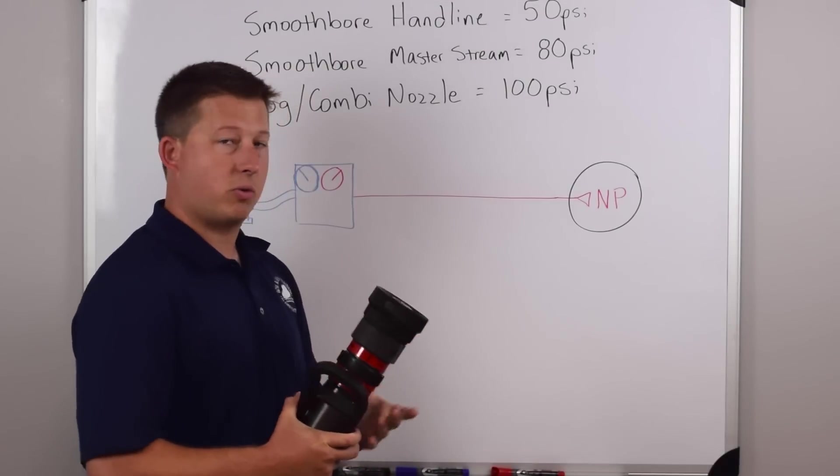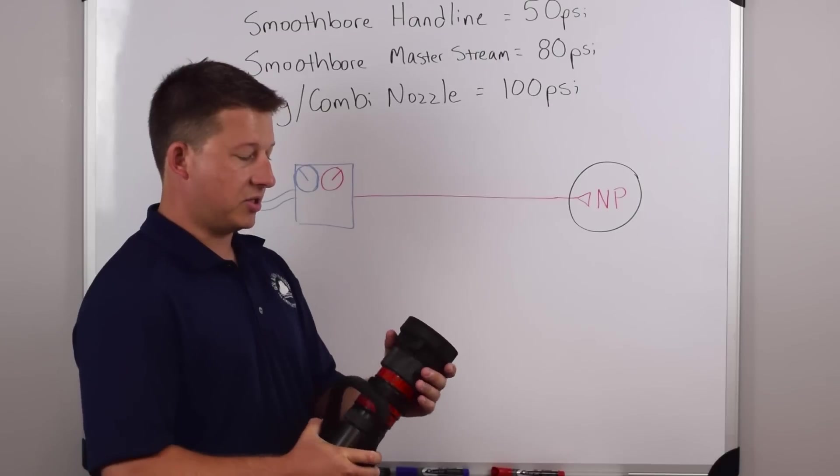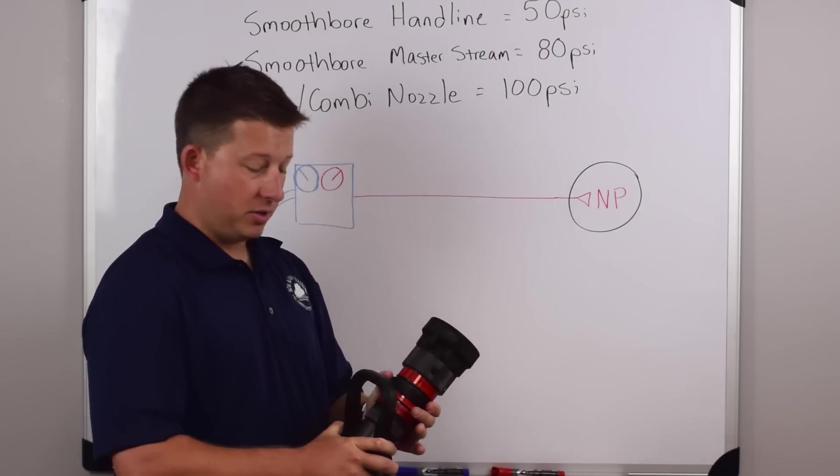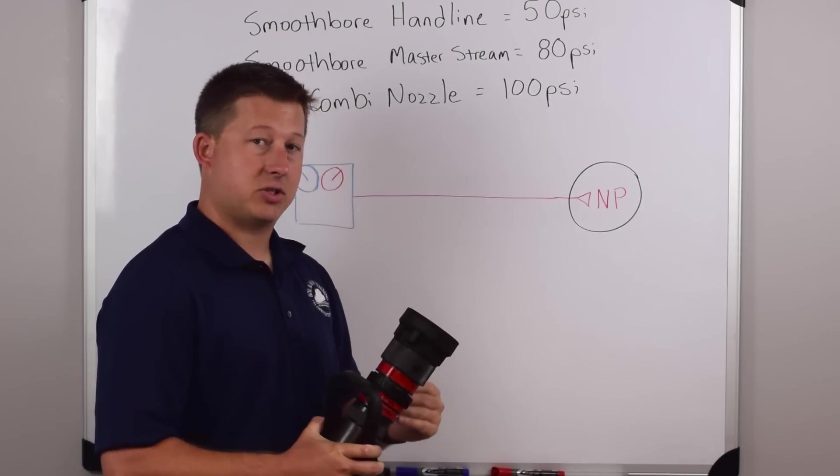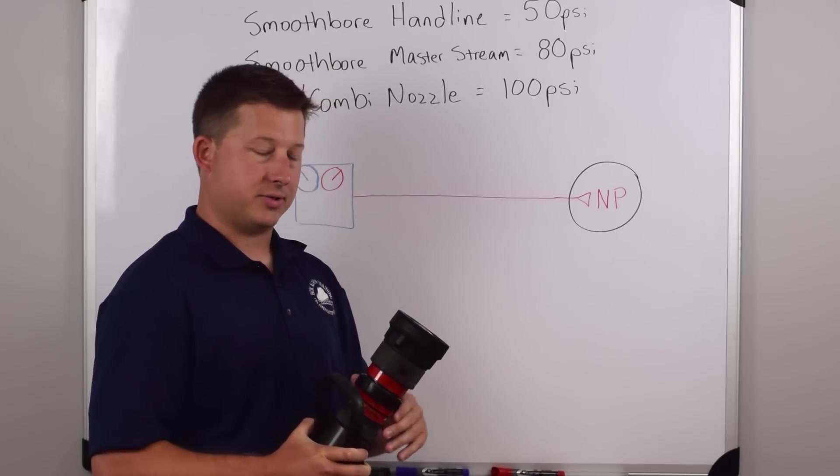The last nozzle we're going to briefly talk about is the fog or the combination nozzle. This nozzle has a selectable pattern and gallonage adjustment. So some of these do not have selectable gallonage. They're called fixed gallonage nozzles and some of them are also automatic nozzles, but we won't go too deep into that.